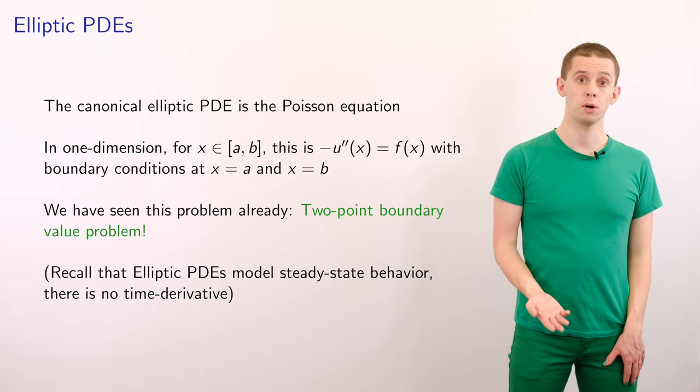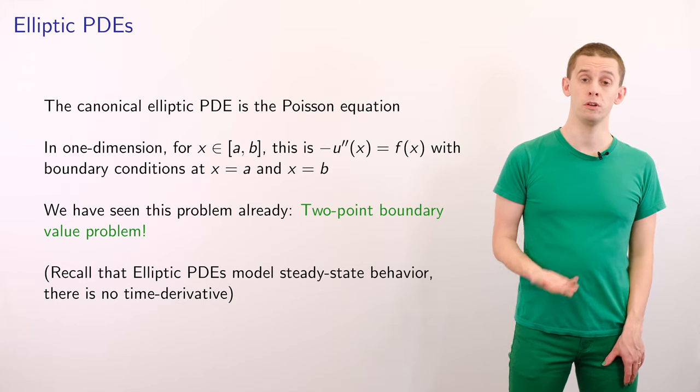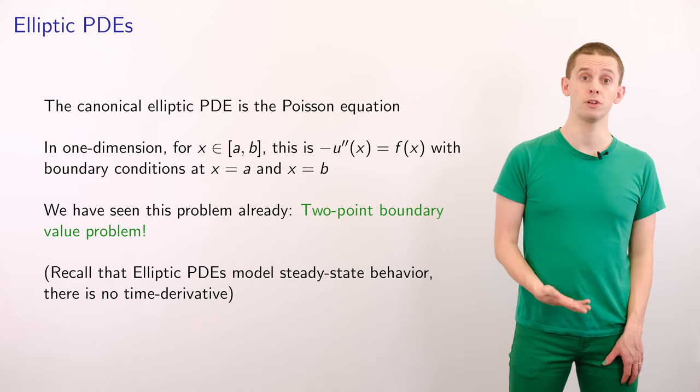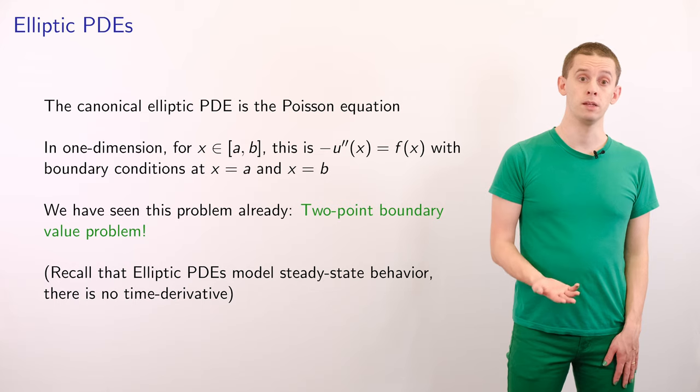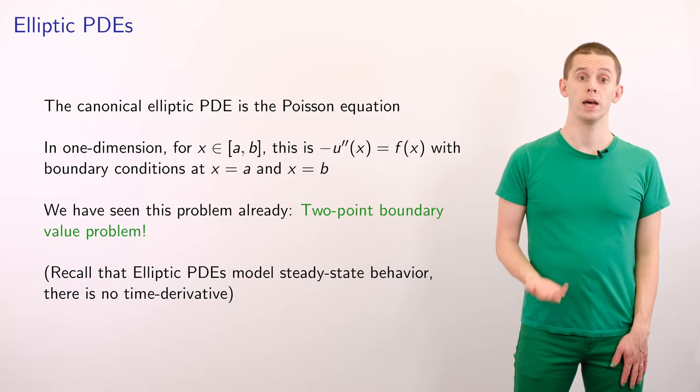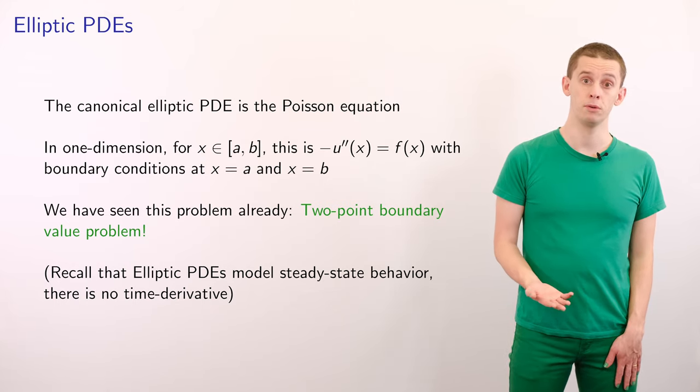And we've already seen this problem. This is the two-point boundary value problem that we considered previously. And recall that elliptic PDEs model steady-state behavior, and therefore there is no time derivative.